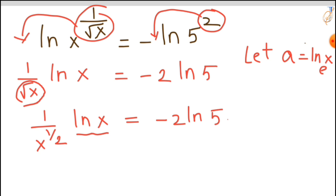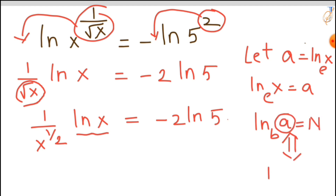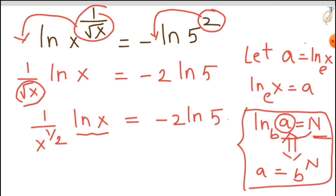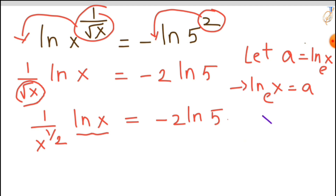Here we have natural log of x, so let's consider a equal to natural log of x with base e, so ln(x) = a. This is in the form of log base b of a equals n, which means we can write a equals b to the power n. So using this log property, we can write x equals e to the power a.